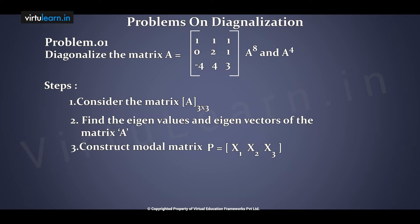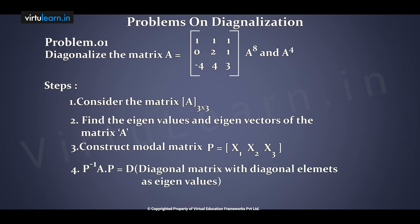Fourth step: calculate P inverse into A into P. If you get a diagonal matrix — meaning all elements are zeros except the principal diagonal elements — then D is the diagonal matrix with diagonal elements as the eigenvalues of A. For example, if eigenvalues are 1, 2, 3, then the diagonal matrix is diag(1, 2, 3).